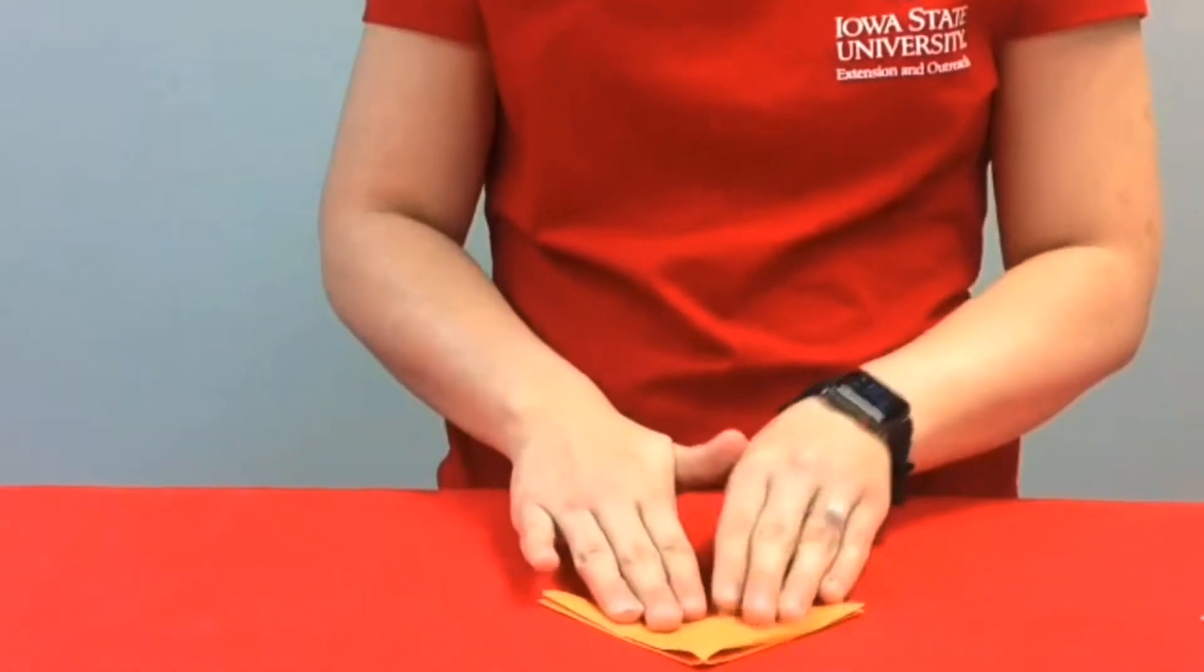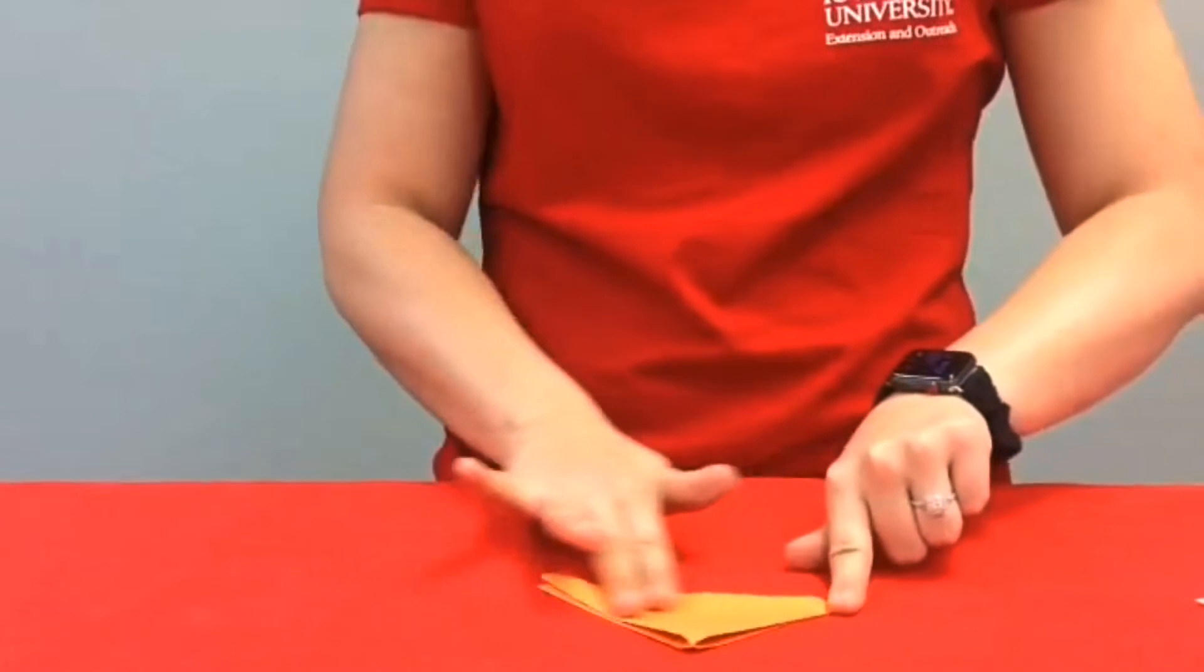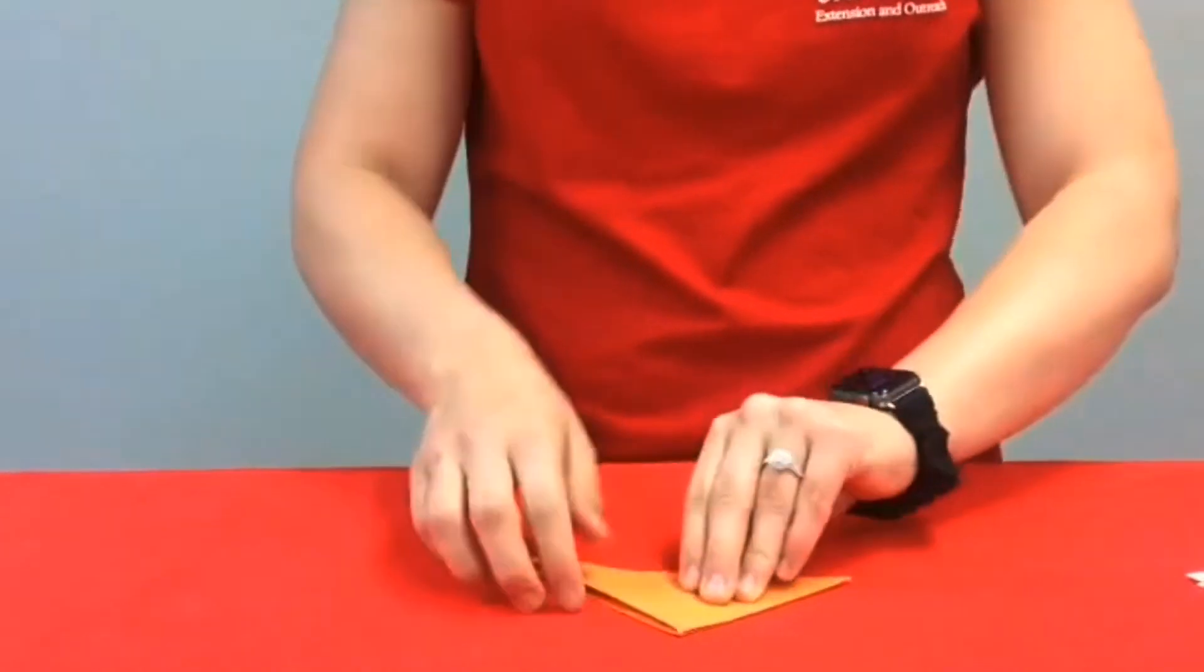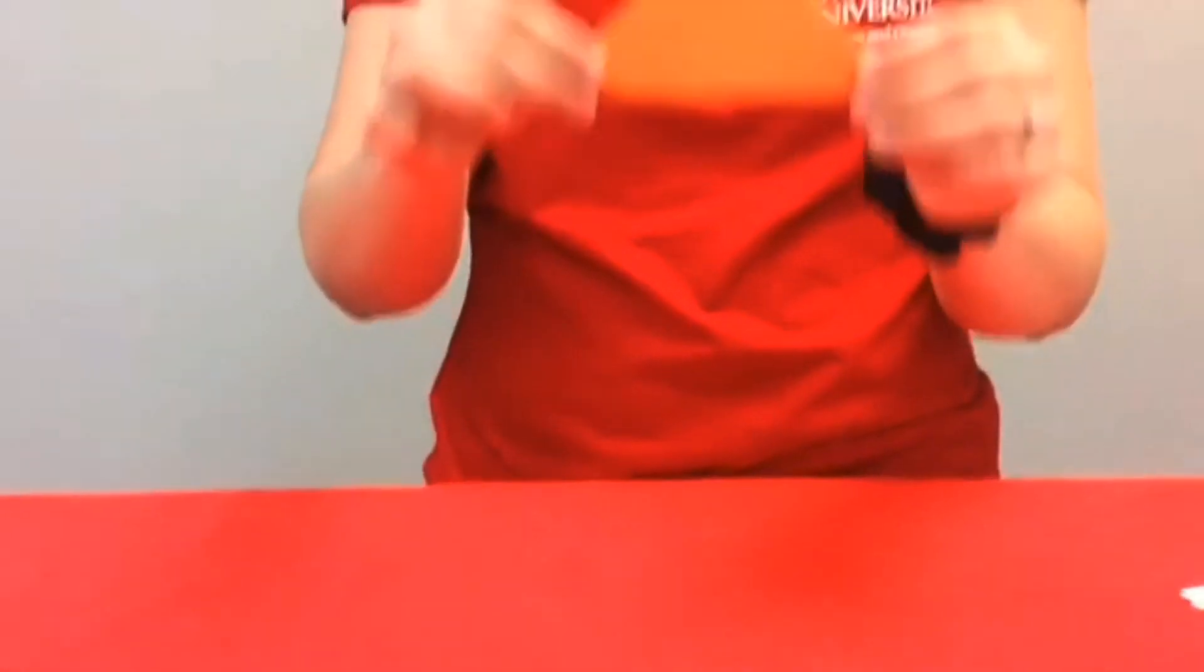So now you're just going to press down onto your triangle. And now you have one big triangle.